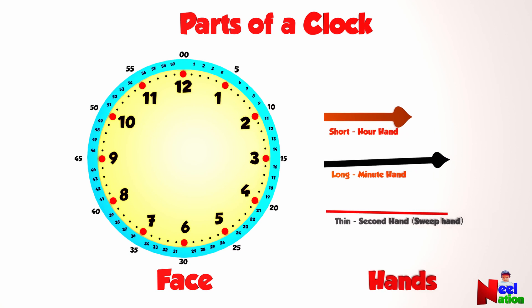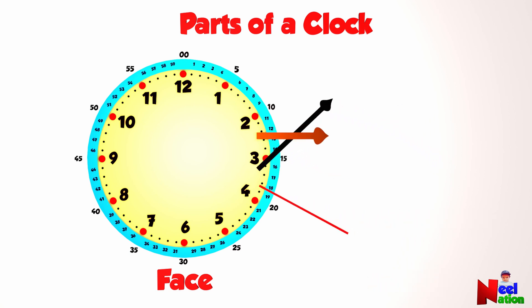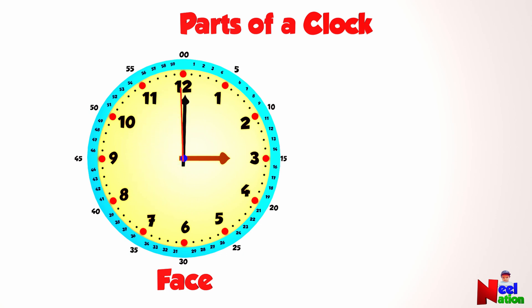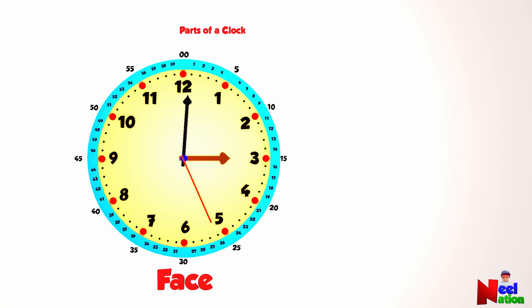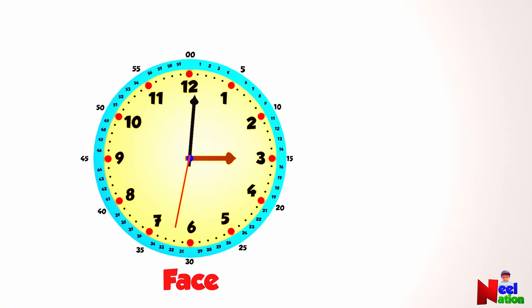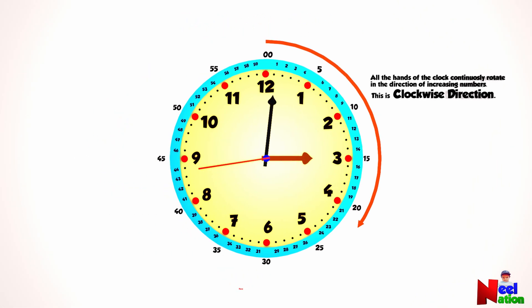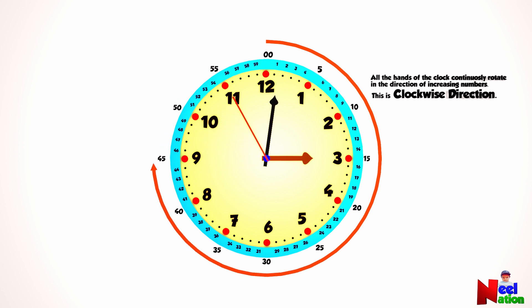The hands are fixed at the center of the face. The hands point to the current time of the day by showing the hours, minutes, and sometimes the seconds. All three hands of a clock continuously rotate in the direction of increasing numbers — this is called the clockwise direction.